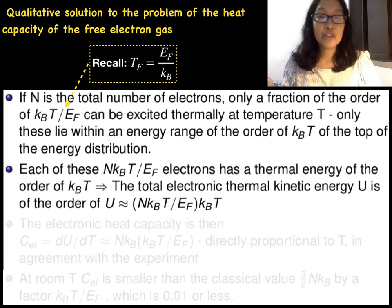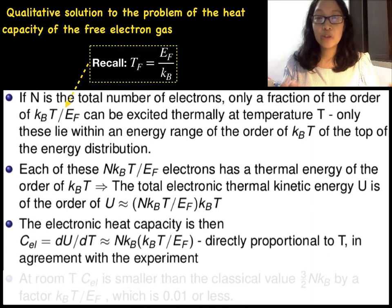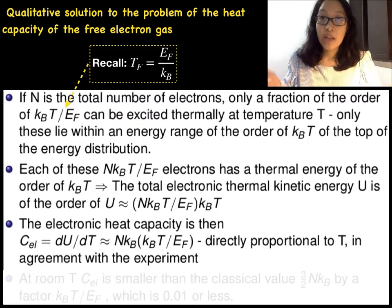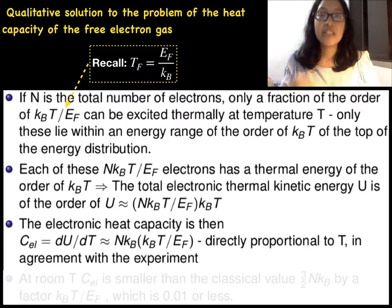Each of these electrons has a thermal energy of the order of kBT. The total electronic thermal kinetic energy is U equals N times T/TF times kBT. The electronic heat capacity is the first order of the thermal energy. So C equals dU/dT and that is equal to NkBT/TF.